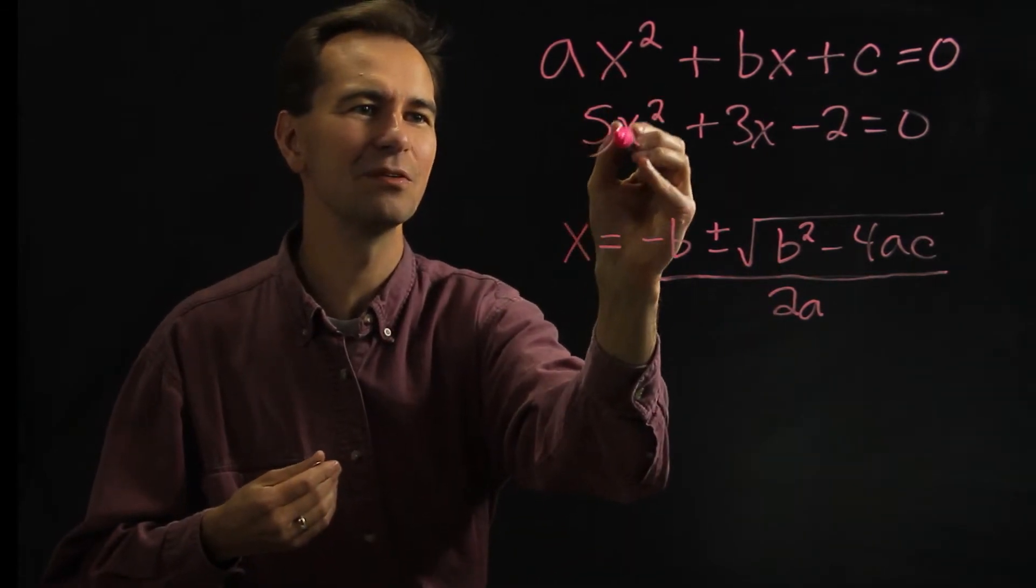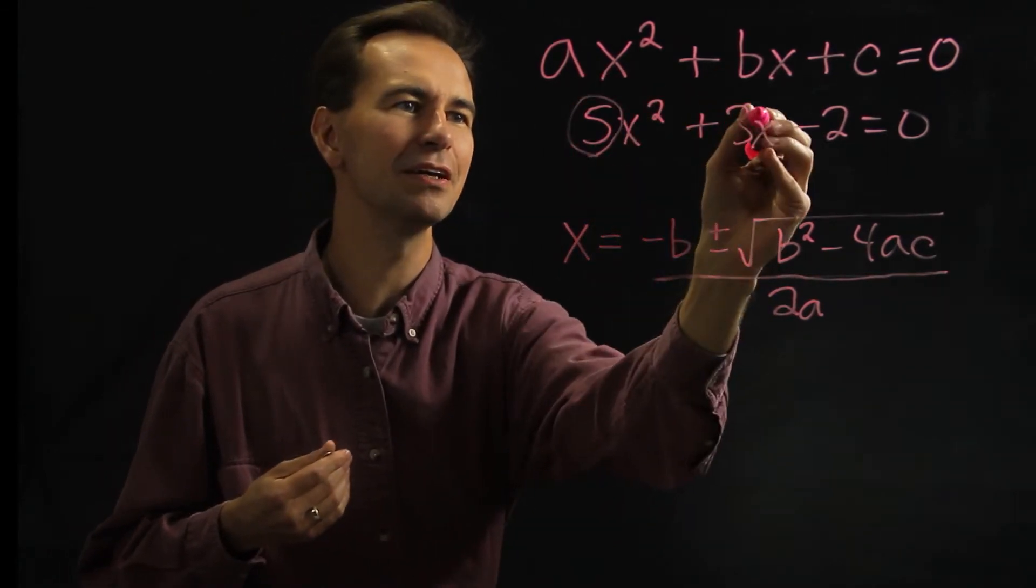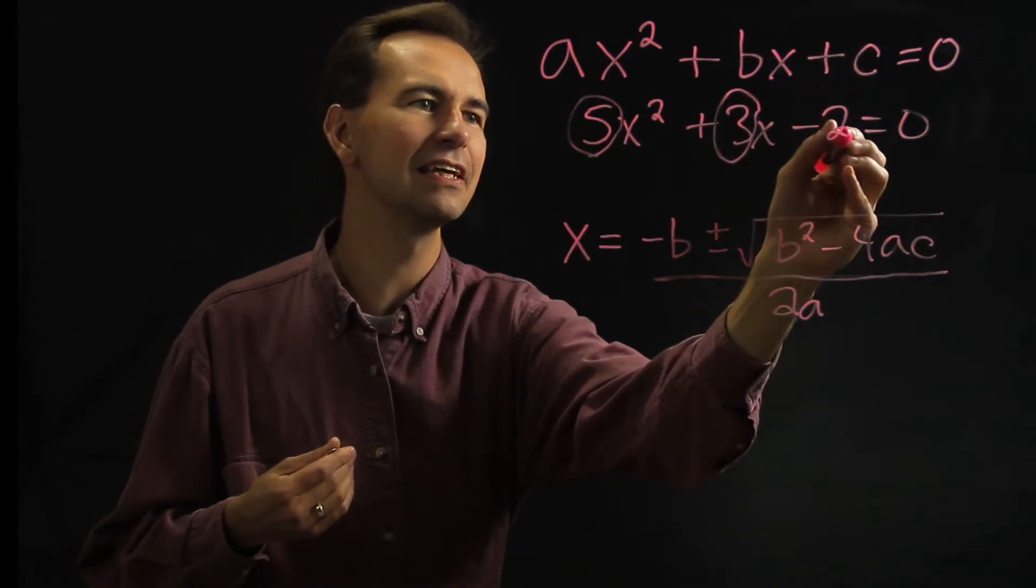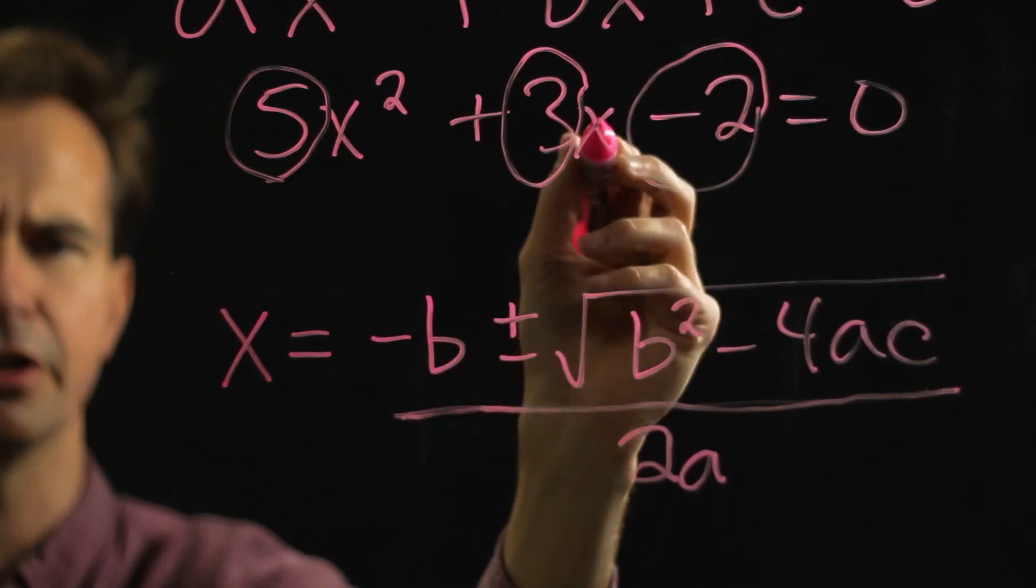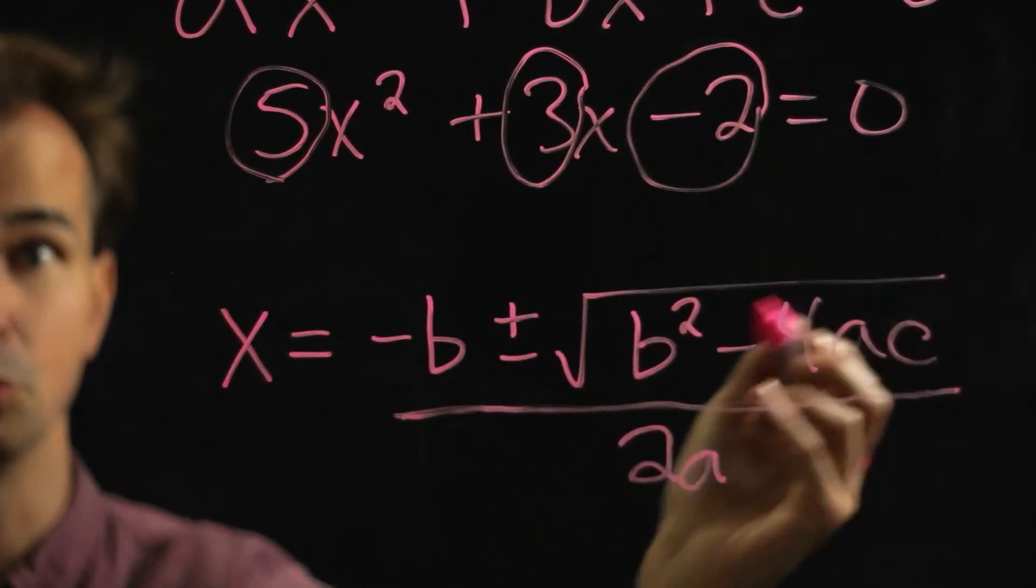So in this case, a would be 5, b would be 3, and c would be negative 2. And it is important to include the sign that's in front of the number, so the whole negative 2 would be the c.